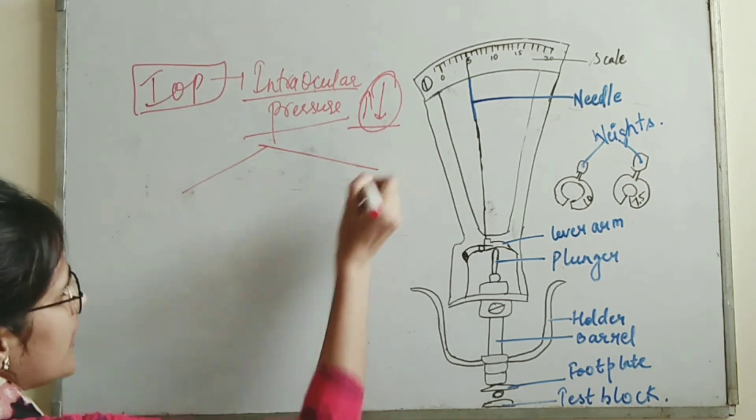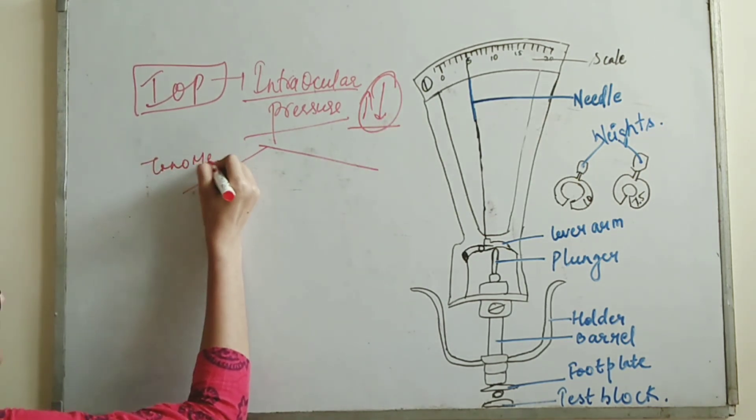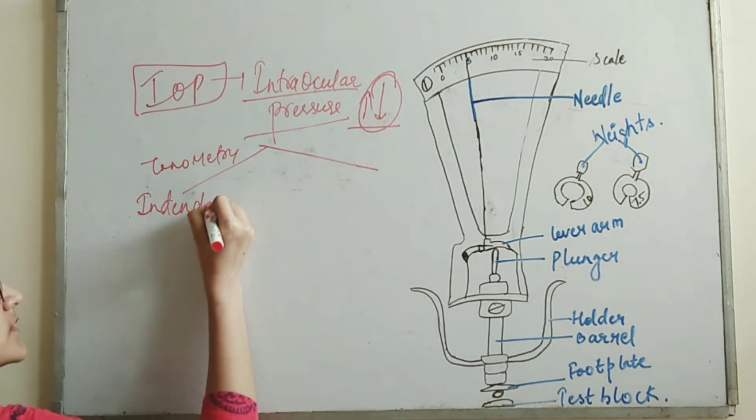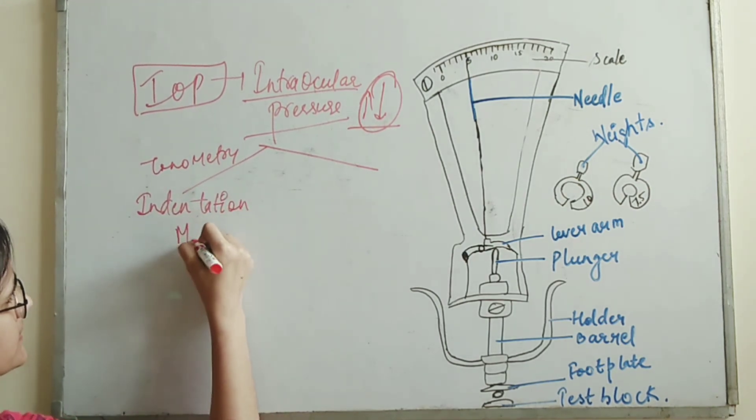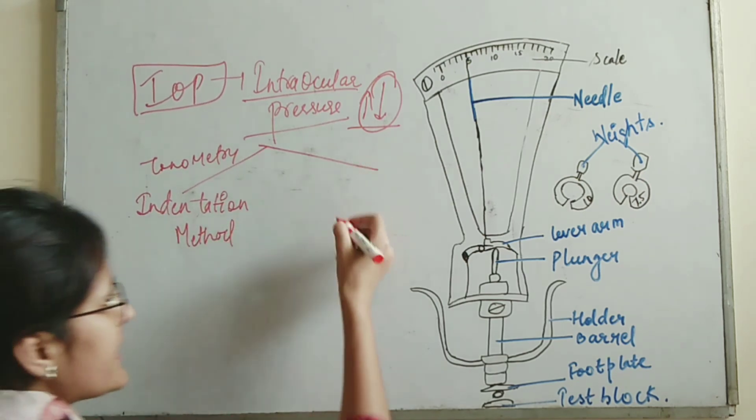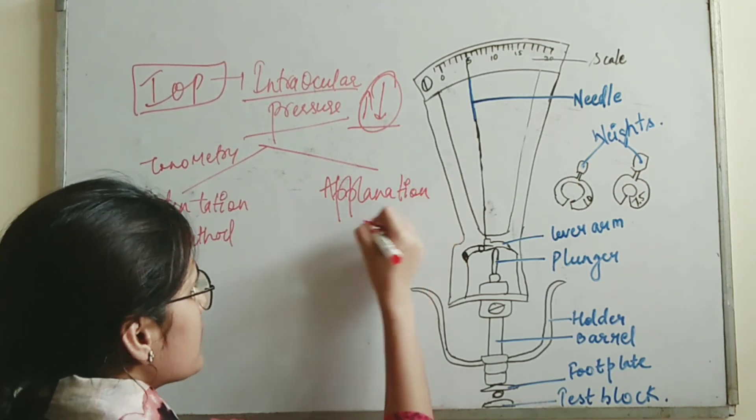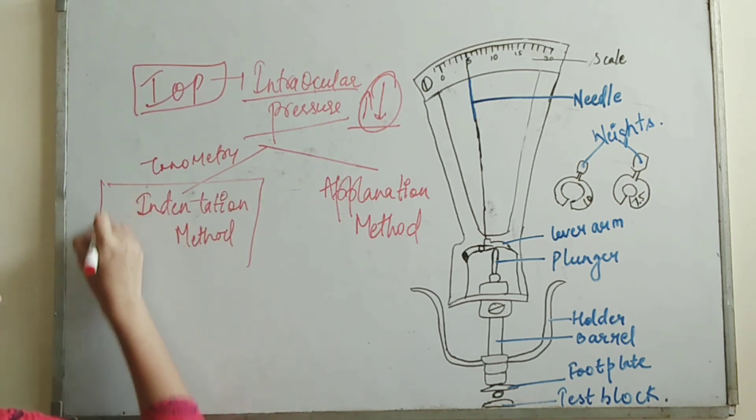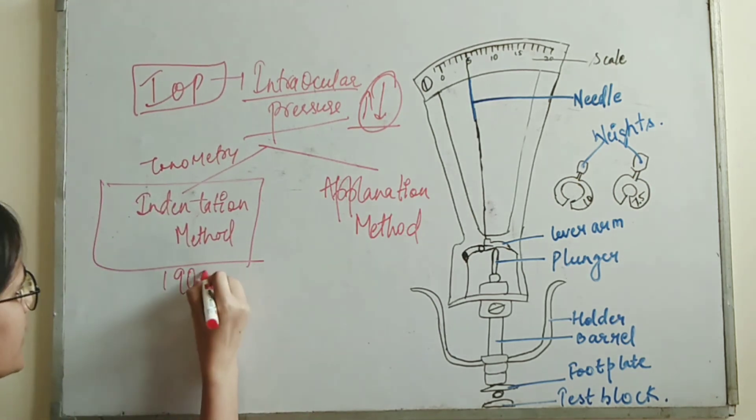It is checked by two kinds of instruments in tonometry. The first one is the indentation method and the second one is the applanation method. Today we are going to learn about the indentation method, which was devised in 1905.